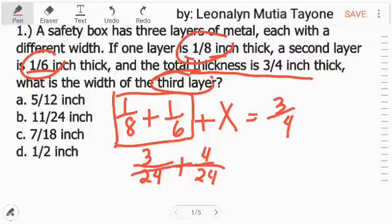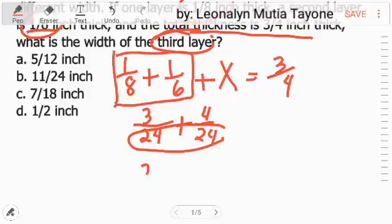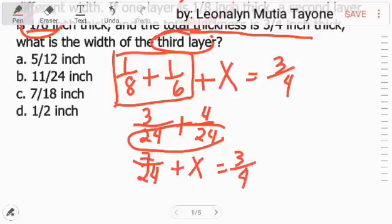Plus, 24 divided by 6 equals 4. 4 times 1 equals 4. In other words, 1 over 6 is equivalent to 4 over 24. Now, copy the denominator 24. Then, add the numerators. 3 plus 4 equals 7. Plus x equals 3 fourth.